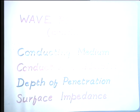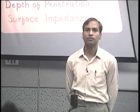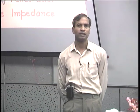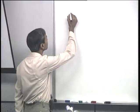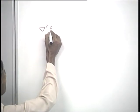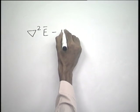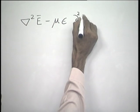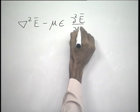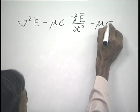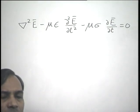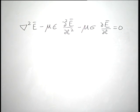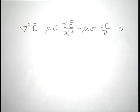Taking up the first topic, wave propagation in a conducting medium, we recall the wave equation for a conducting medium: del²E minus με·∂²E/∂t² minus μσ·∂E/∂t = 0. This is the wave equation in a conducting medium involving the electric field.